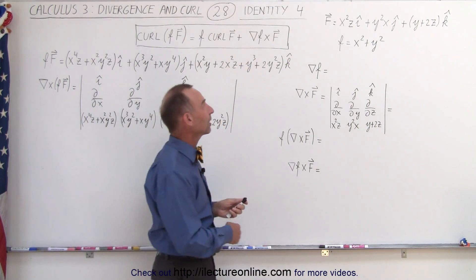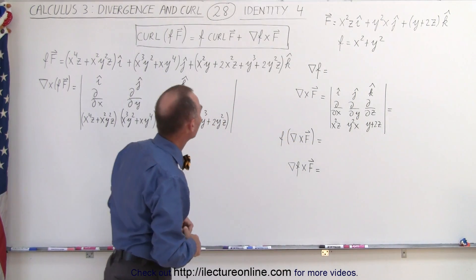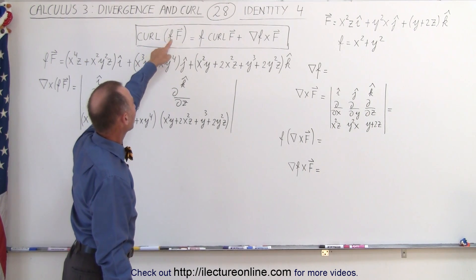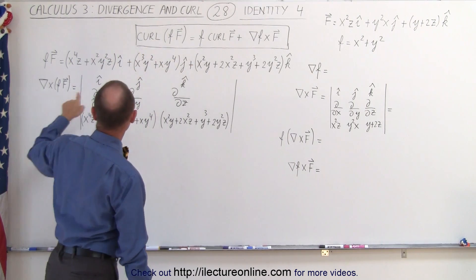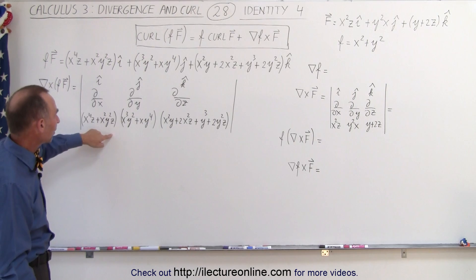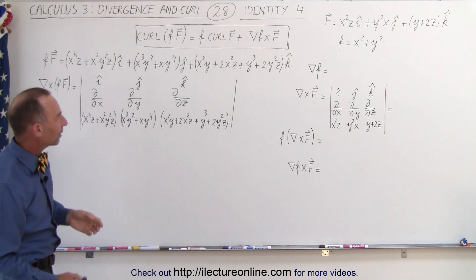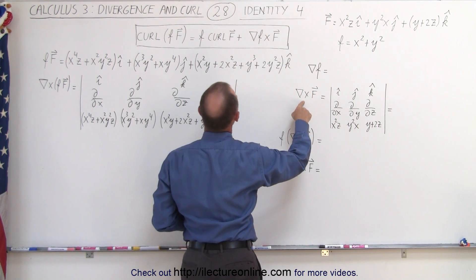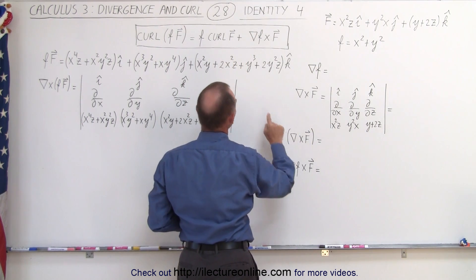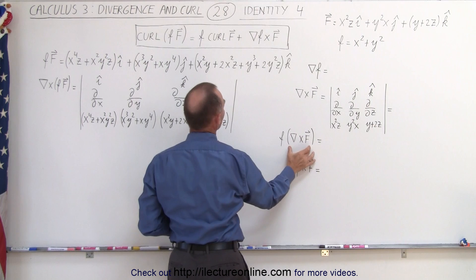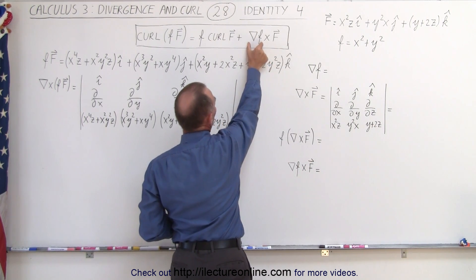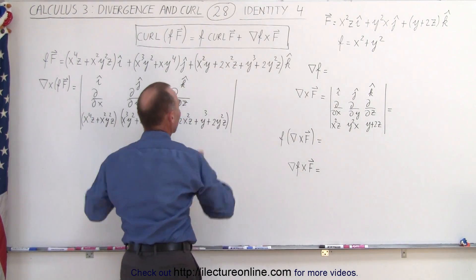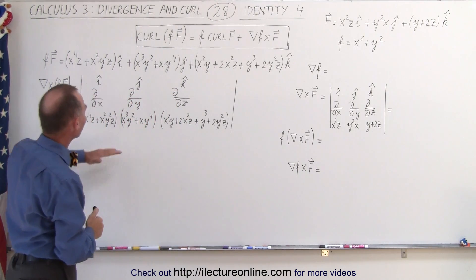We have our two examples: the vector field and the scalar function defined. We need to first multiply the scalar function with the vector field and take the curl of that — that is the left side. On the right side, we need to find the gradient of f, the scalar function, find the curl of the vector field, multiply the scalar function times that curl, then multiply the gradient with the vector field via the cross product, sum those together, and that should equal the left side.